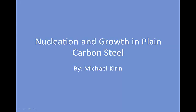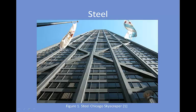This presentation is on the nucleation and growth mechanics in plain carbon steels. Steel is an alloy of iron, carbon, and usually other alloying elements that is commonly used in industrial and structural applications. According to the World Steel Association, the U.S. produced 86.2 million tons of crude steel in 2011, and the world together produced 1,490 million tons. It is clear that the world views steel as a great material, as it is produced in such mass quantity.